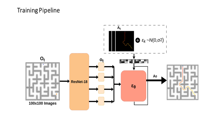Our pipeline utilizes a ResNet encoder to extract features from the map images. These features, in conjunction with the noisy demonstration trajectories, are then input into our CNN-based network to execute the diffusion policy.